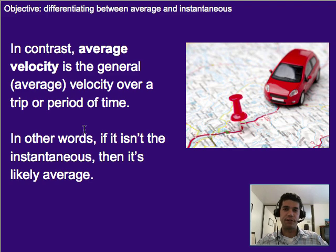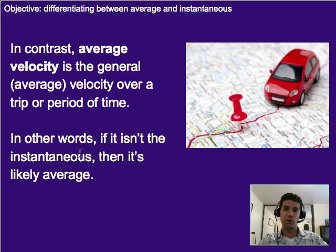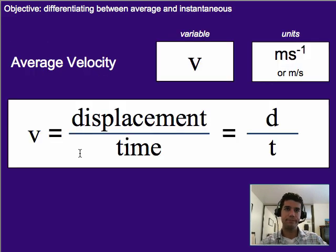One way to differentiate between the two: if you can remember what instantaneous is, then basically if it's not instantaneous, it's probably an average speed or velocity. And usually we're going to be working with averages whether you realize it or not. Average velocity is based on the same equation, but instantaneous velocity has to be derived in a different way and uses a different formula.